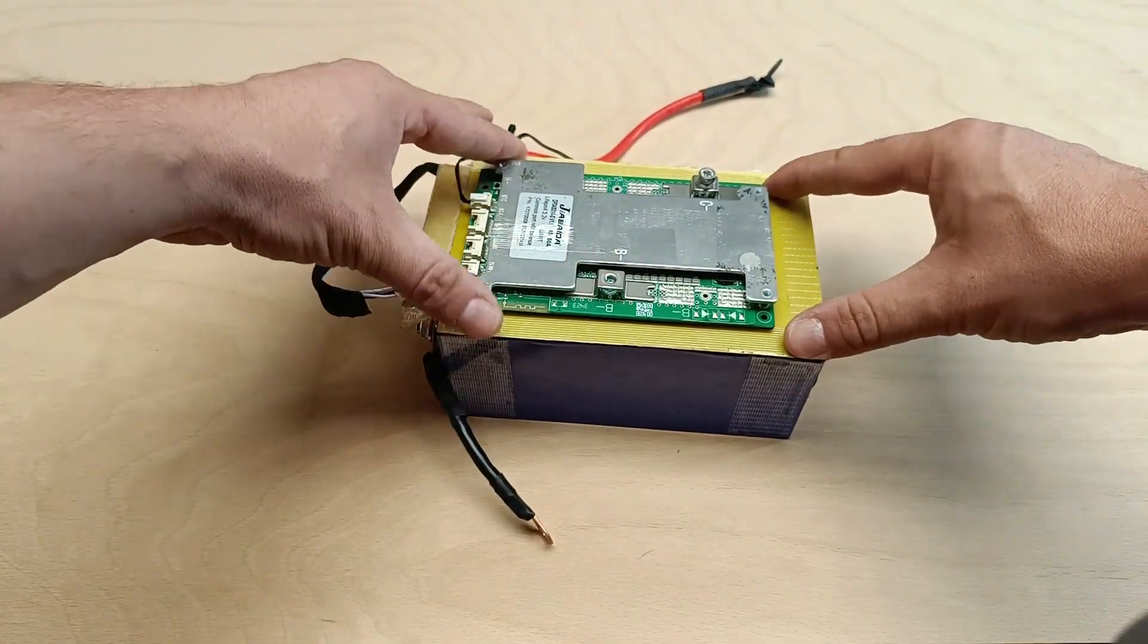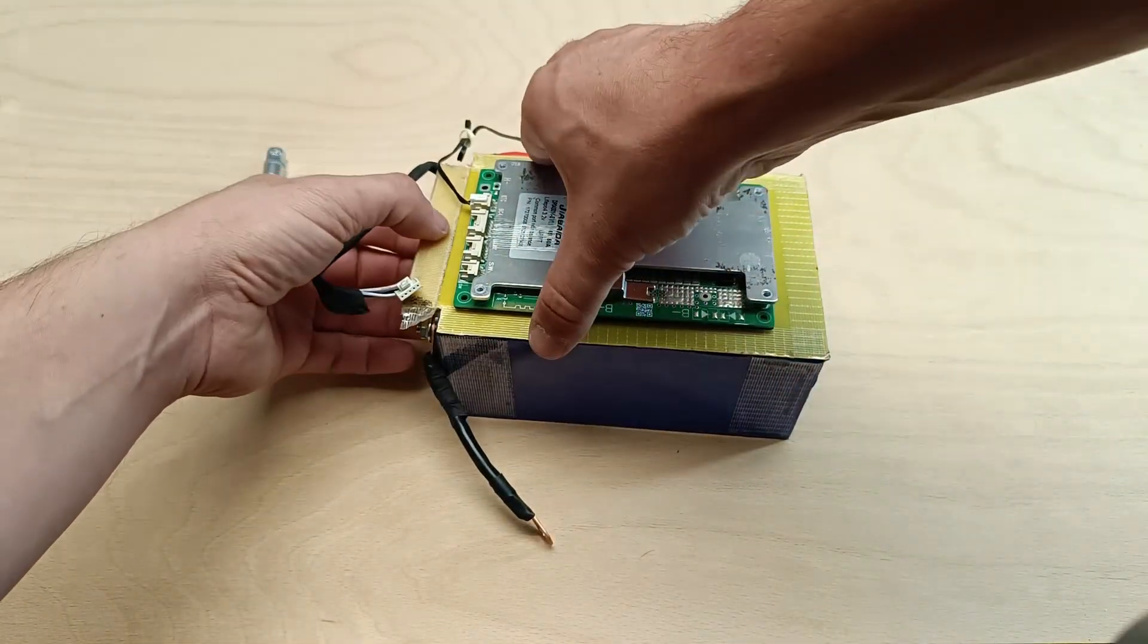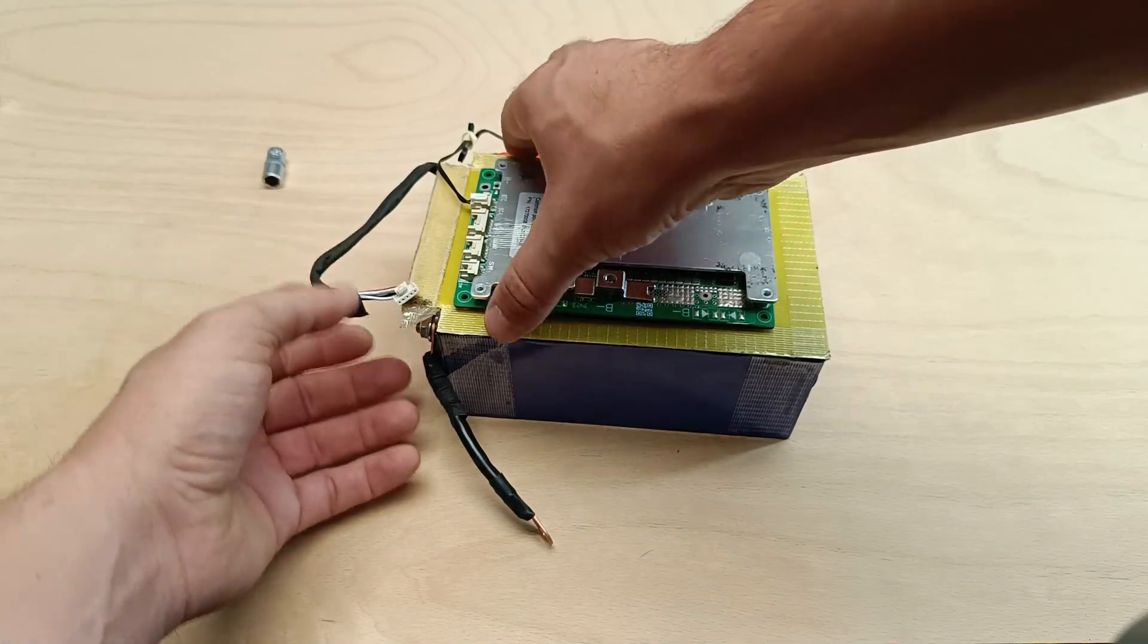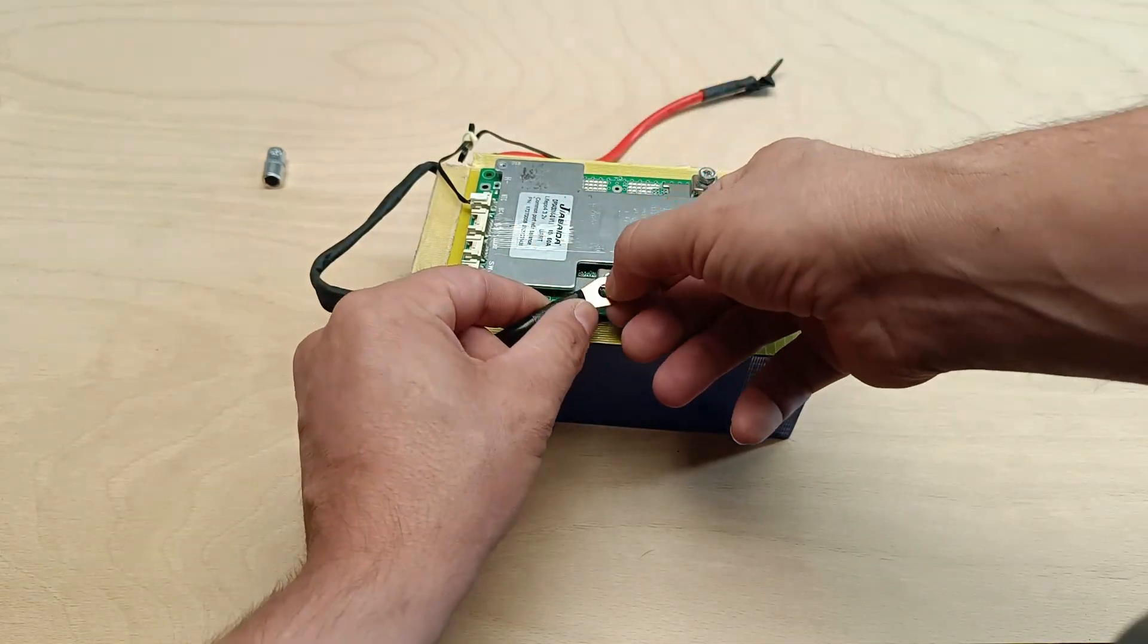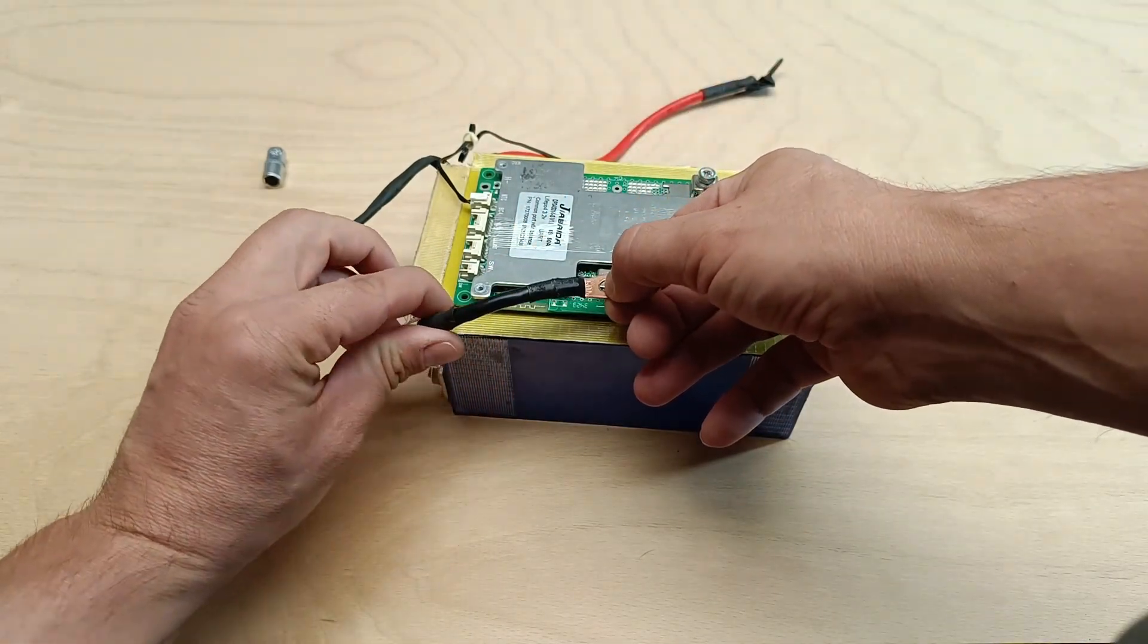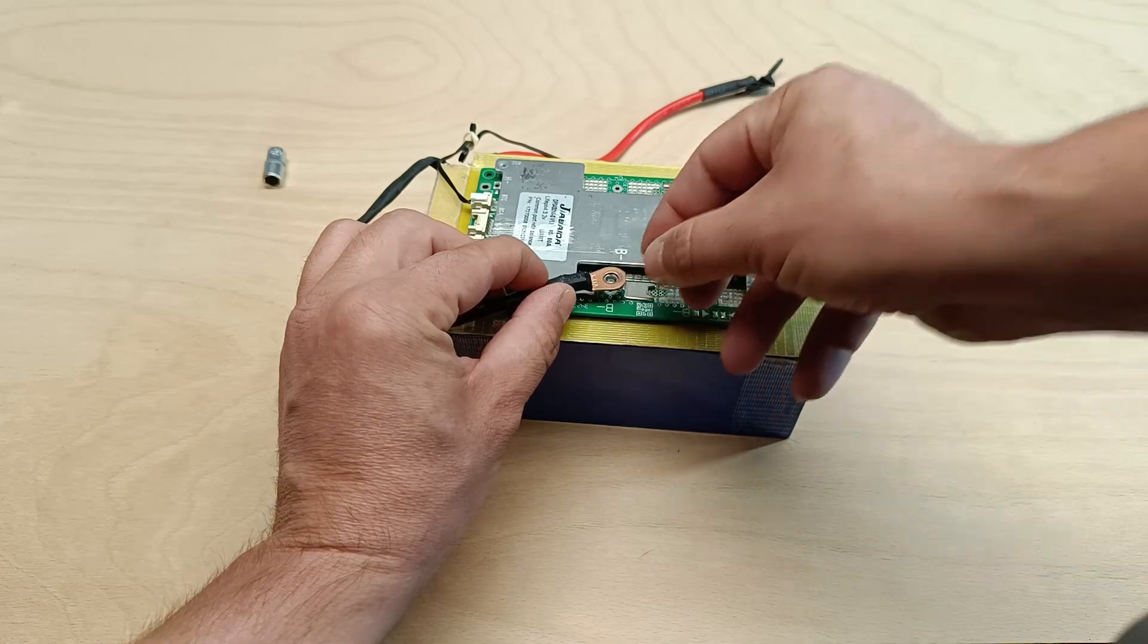These 12.8 volt lithium iron phosphate cells are connected in series to provide the correct voltage. While our total capacity will be 30 amp hours, it's important to securely fasten the cells and make sure all connections are tight to avoid any loose contacts.